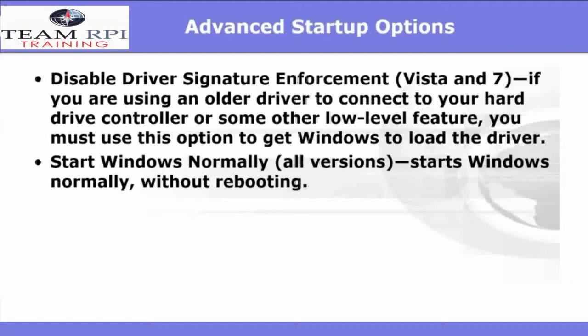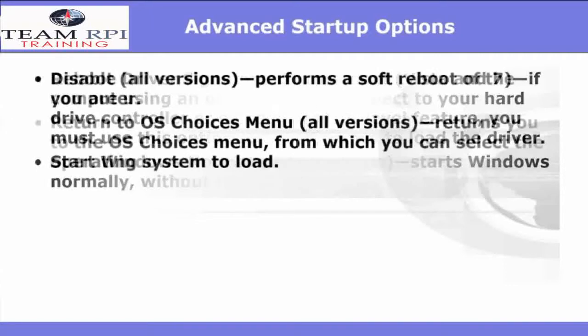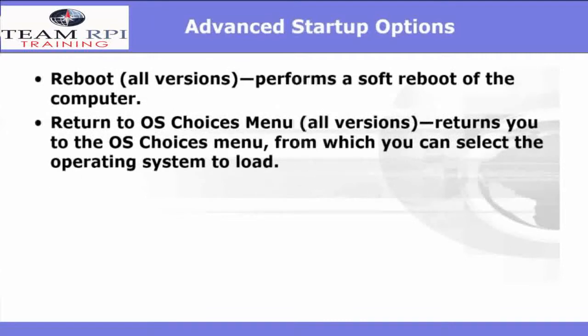Starting Windows normally will start the Windows environment normally, or at least try to, without rebooting. The Reboot option performs a soft reboot of the computer. Or you could select Return to the OS Choices menu, available with all versions of Windows, which returns you to the Operating System Choices menu from which you can select the operating system to load.